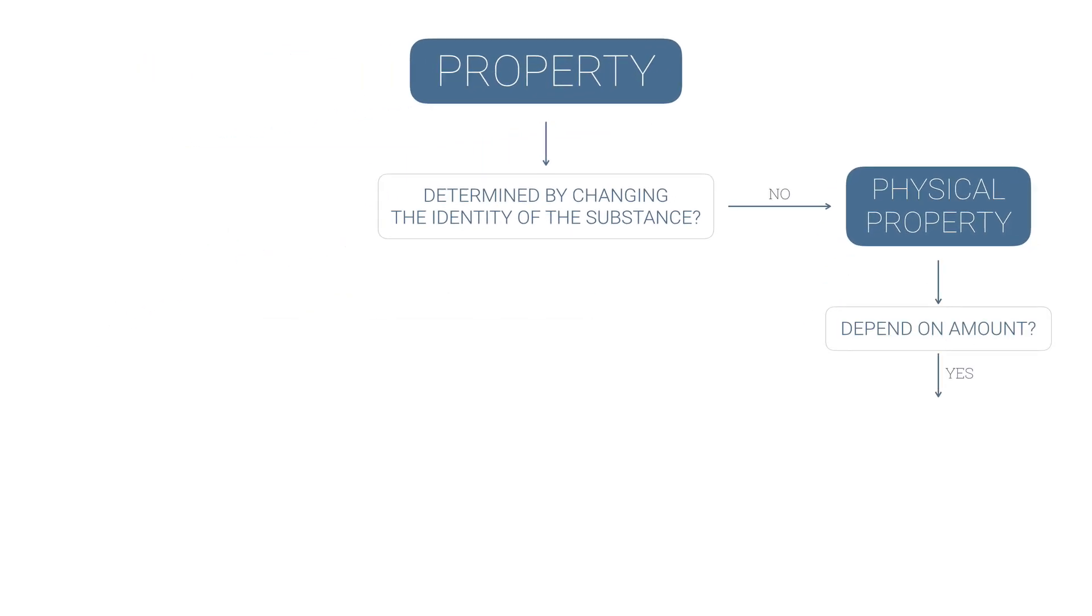Physical property can depend on amount. If it does depend on the amount of the substance that's there, for example if I had two pieces of copper and they were different in size or shape, then those would be examples of extensive physical properties.